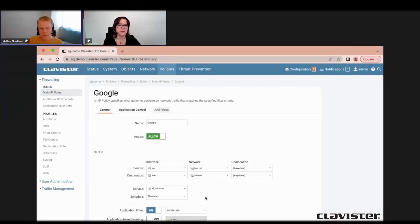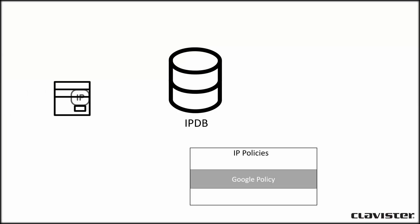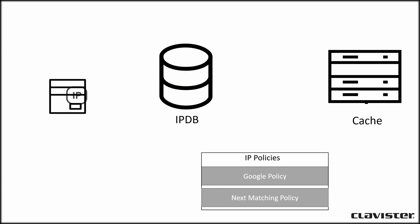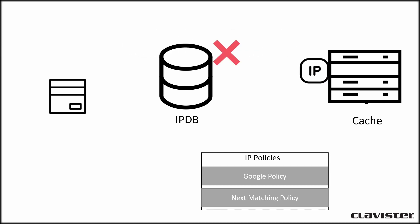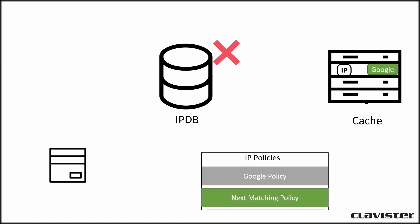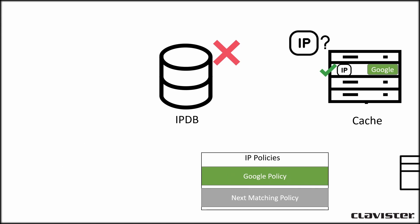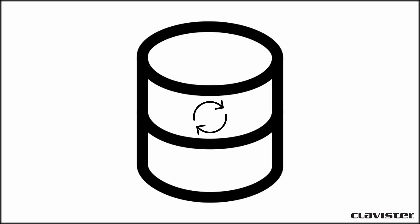We detect the application on the first packet being sent through the firewall, and this is done in two different ways. One is where we use well-known IP addresses that belong to Google, so that hits directly and we send the traffic correctly. If we don't already know it's Google traffic, then the first time it goes through the firewall it's identified as Google, then it's added to a cache. The next time someone goes to the same application or combination, it will be routed according to the policy. These well-known IPs also get updated periodically.